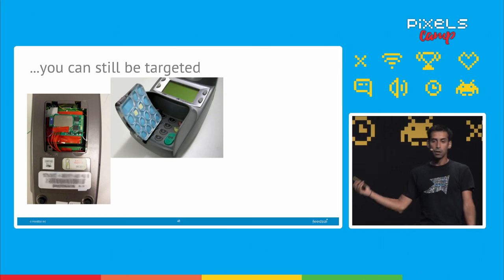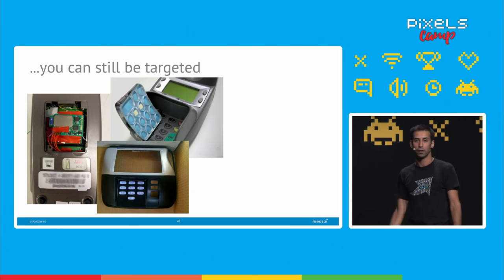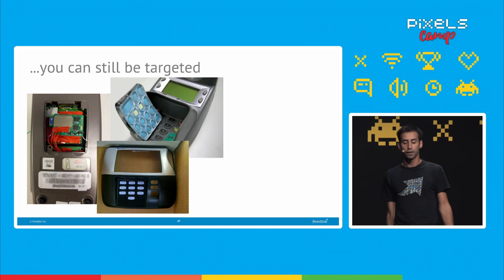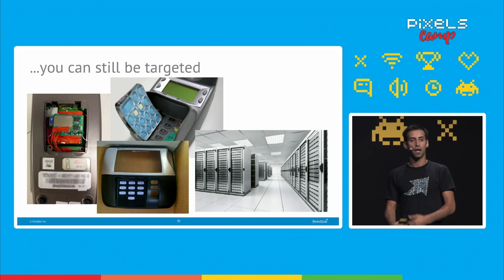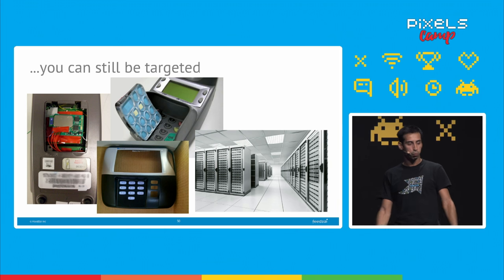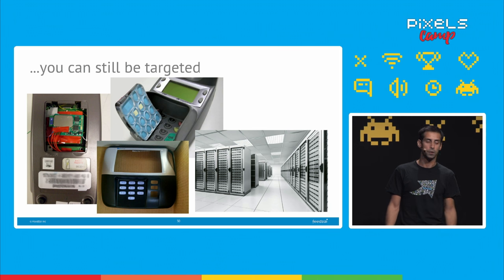You may be thinking: I'm done with ATMs, I'm never going to use them again. Well, that won't solve it. A skimming device may be planted inside a point of sale. A keyboard or even a full point-of-sale overlay may be planted. And if all else fails, fraudsters can get hundreds of thousands of cards in a single data breach. There's pretty much no way to escape this problem.